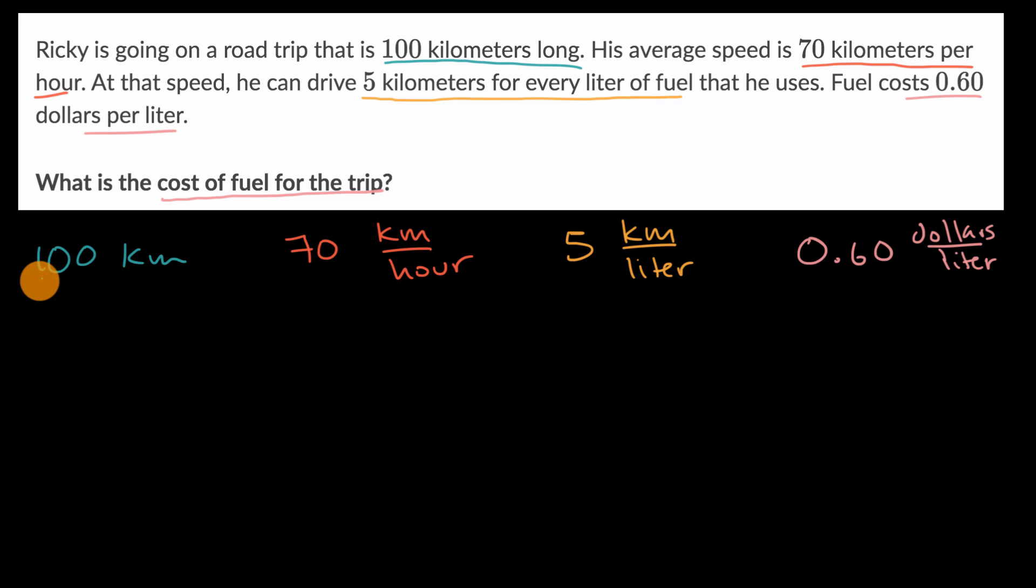Let's see, we're going 100 kilometers. That's the total distance. And this tells us essentially how many liters we're going to have to use over those 100 kilometers. Now you might say, how exactly does that work? Well, if I'm going five kilometers per liter, if I were to take the reciprocal of this information, I would get one-fifth of a liter per kilometer. That's how much fuel I use per kilometer, one-fifth of a liter.